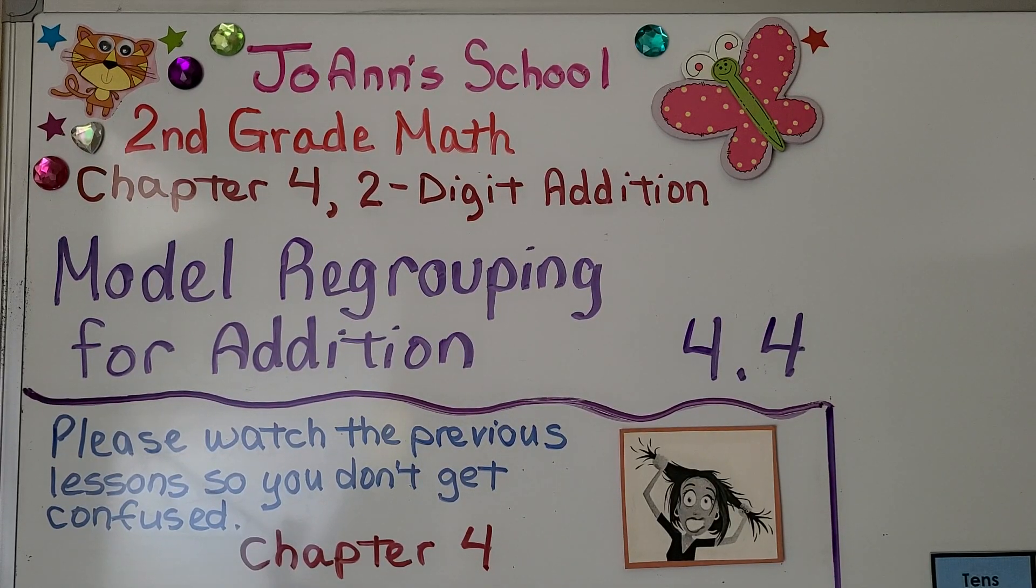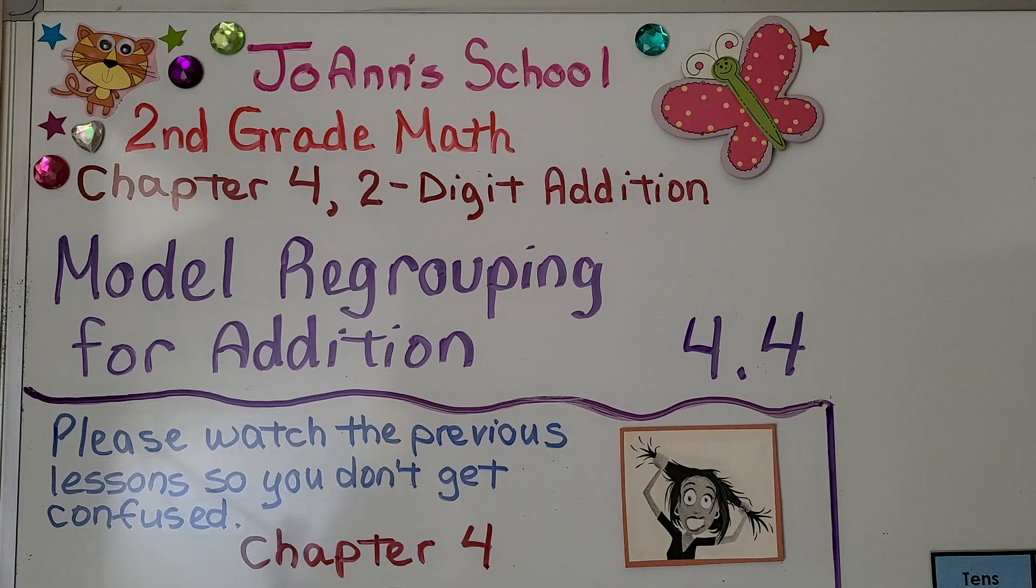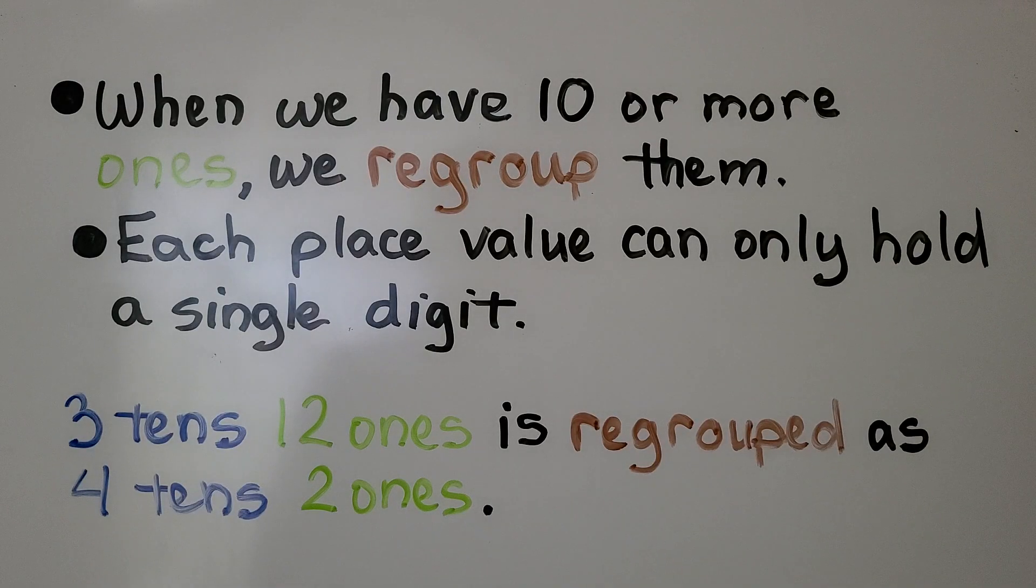Lesson 4.4: Model Regrouping for Addition. When we have ten or more ones, we regroup them. Each place value can only hold a single digit, one digit.